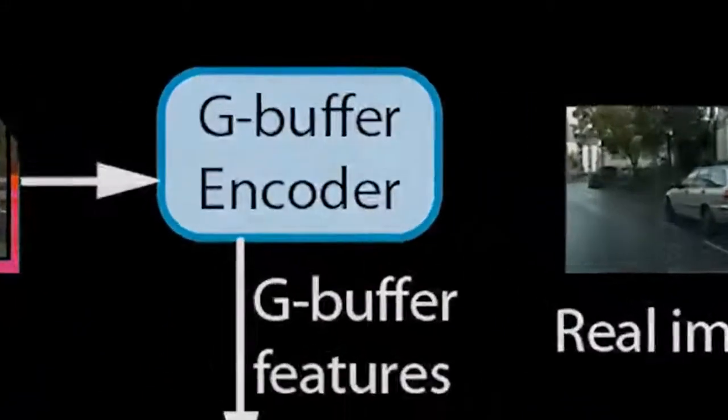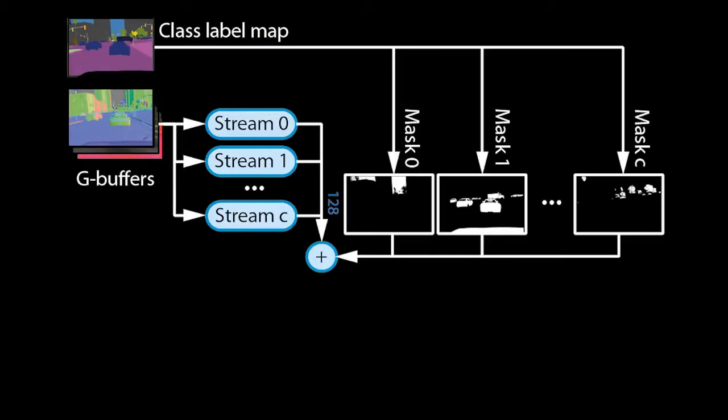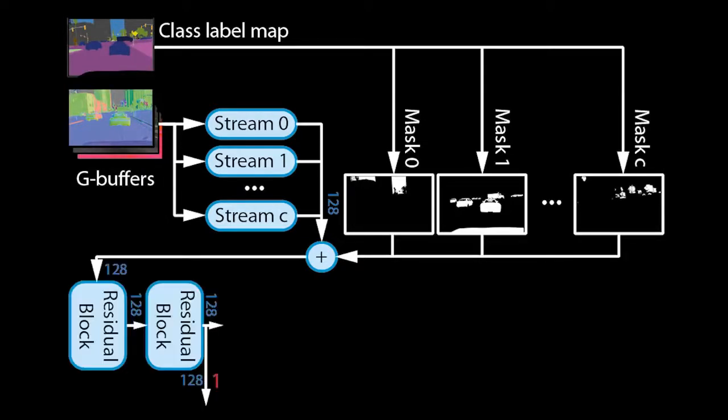Let us now zoom in on the G-buffer encoder. From the G-buffers, we can derive a semantic class label map, which assigns an object ID to every pixel. We pass the G-buffers through multiple convolutional network streams and fuse the streams again based on the object IDs. This allows the encoder to learn different ways of processing for each type of object — for example, trees will be treated differently from cars. The resulting feature tensors are further processed by residual blocks, which output tensors at multiple scales.